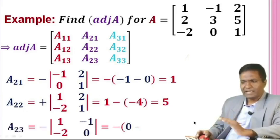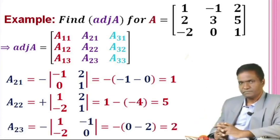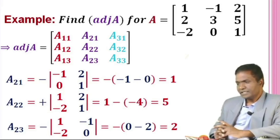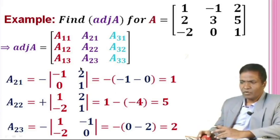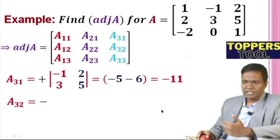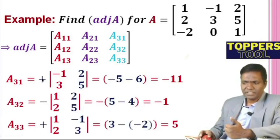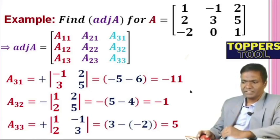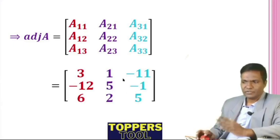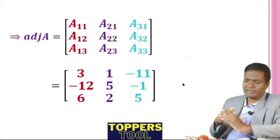So this is how the cofactors are written. After arranging all the cofactors and taking the transpose, this is your adjoint of the 3×3 matrix.